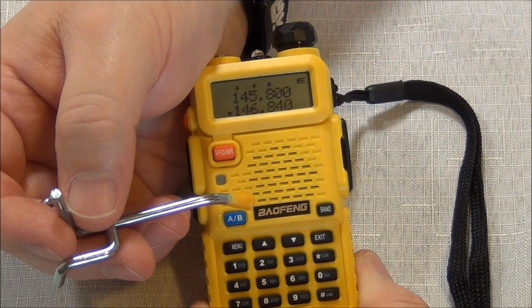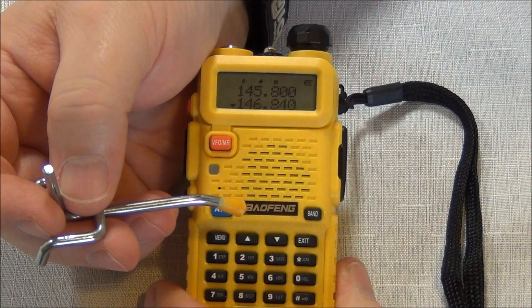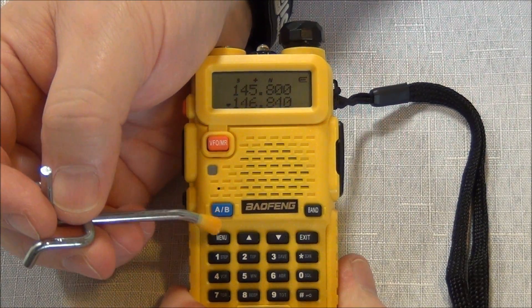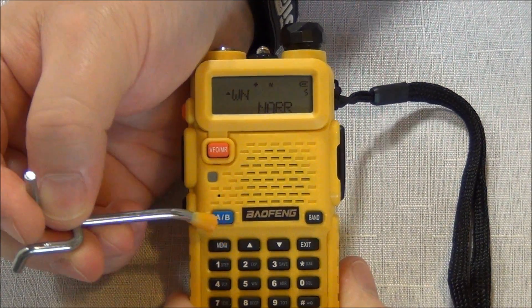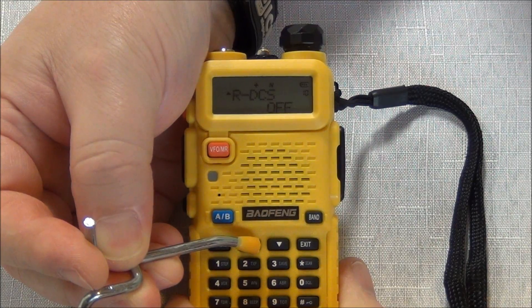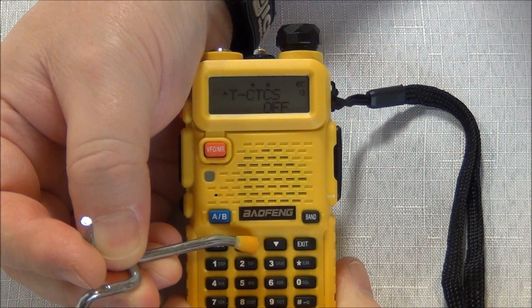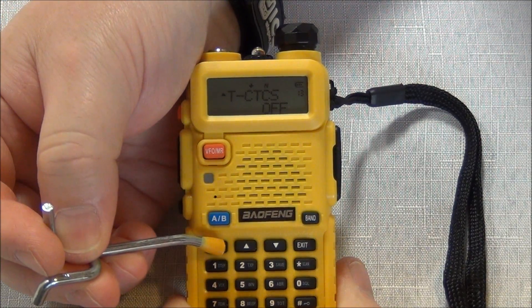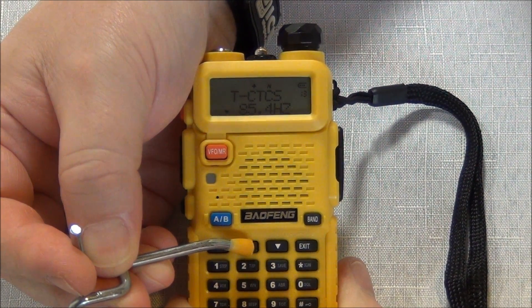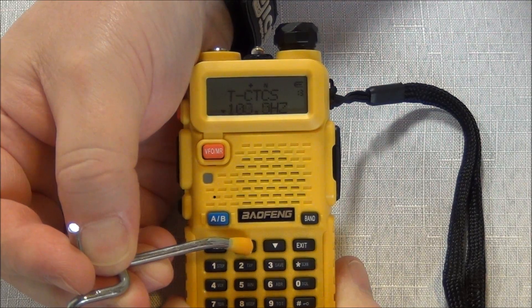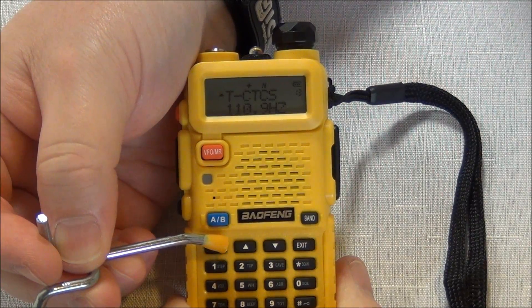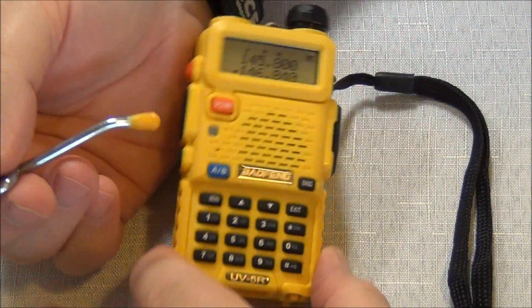The next thing we need to put in is our CTCSS code on the transmit side. Receive side is optional. I personally don't use them, but some people might. We go to menu. And we're going to go up to number 13. You can see my tone is off. I hit menu to select. And the tone of this repeater is 110.9. So I just hit the up button until I get 110.9. Menu to select it and exit out.